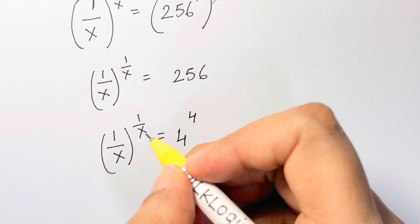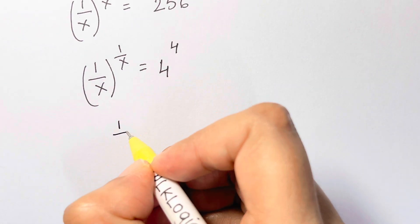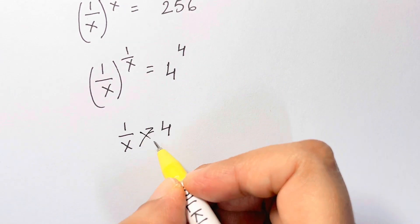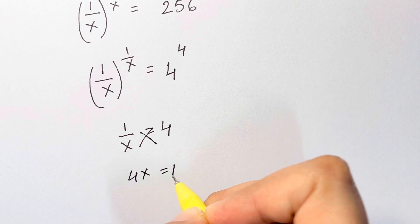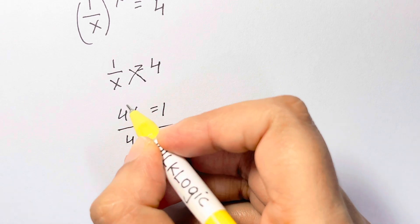So here now you can equate them—same bases, same exponents, equate them. So you have 1 over x is equal to 4. Just cross multiply, so you have 4x is equal to 1. Divide both sides by 4 to eliminate this 4 from here.